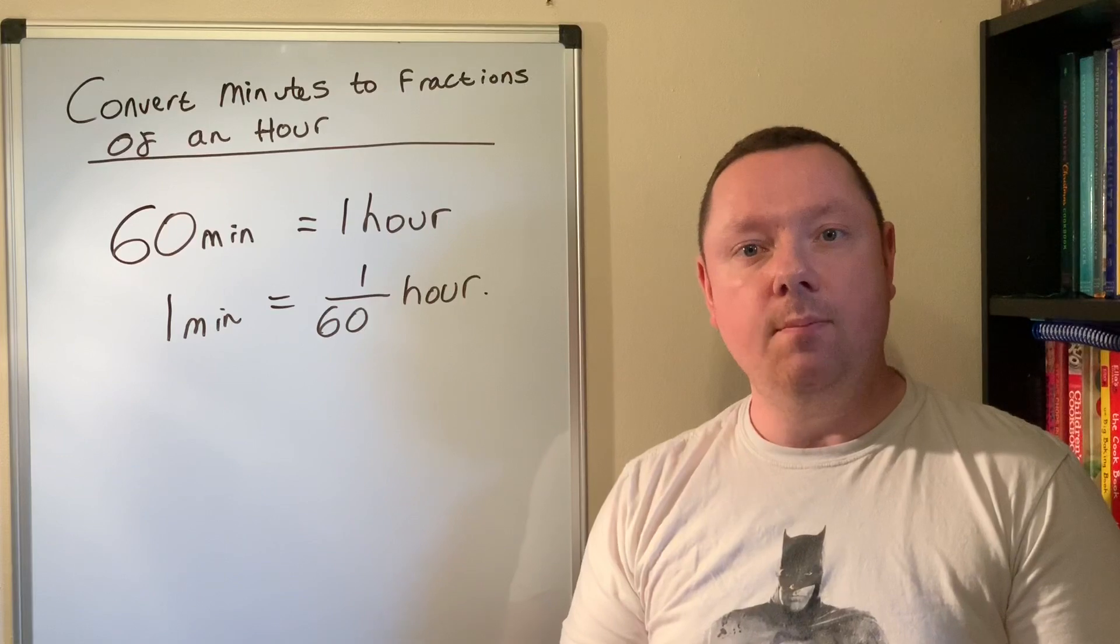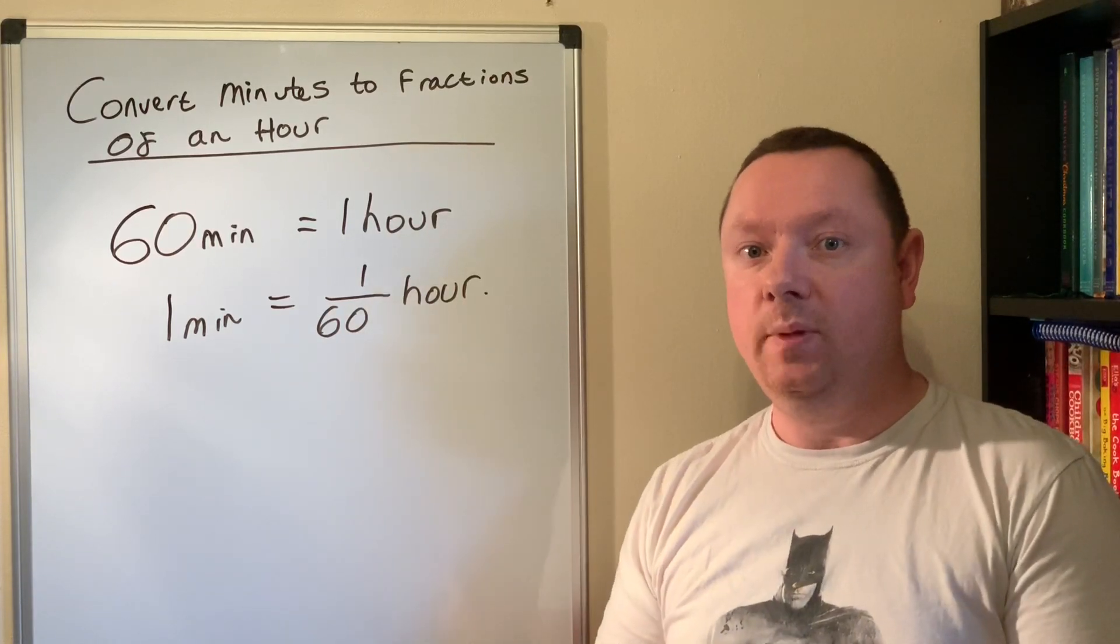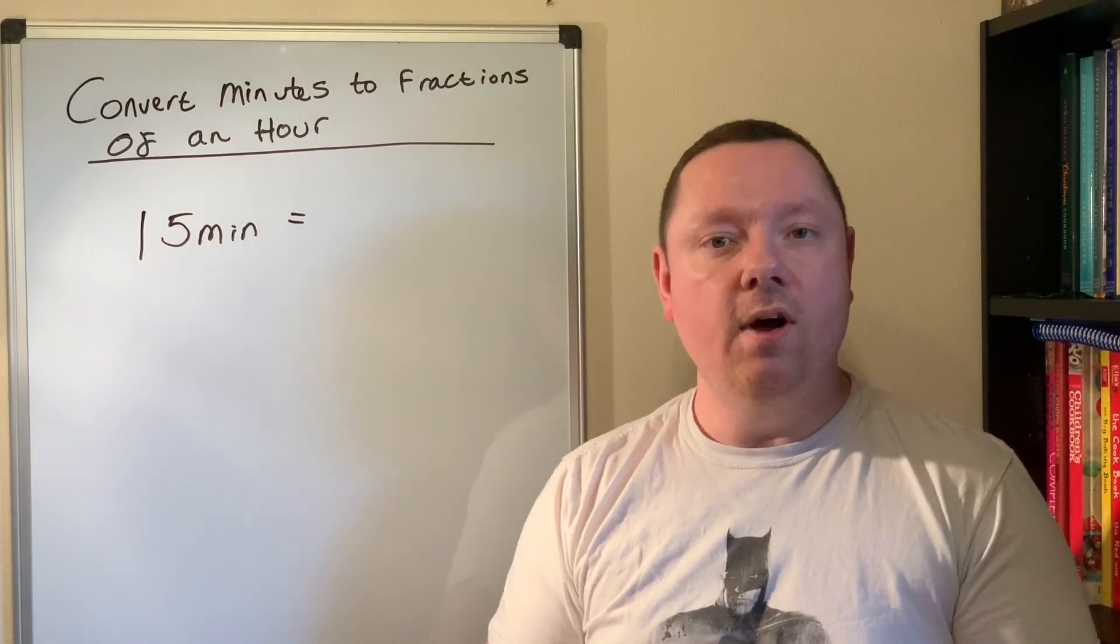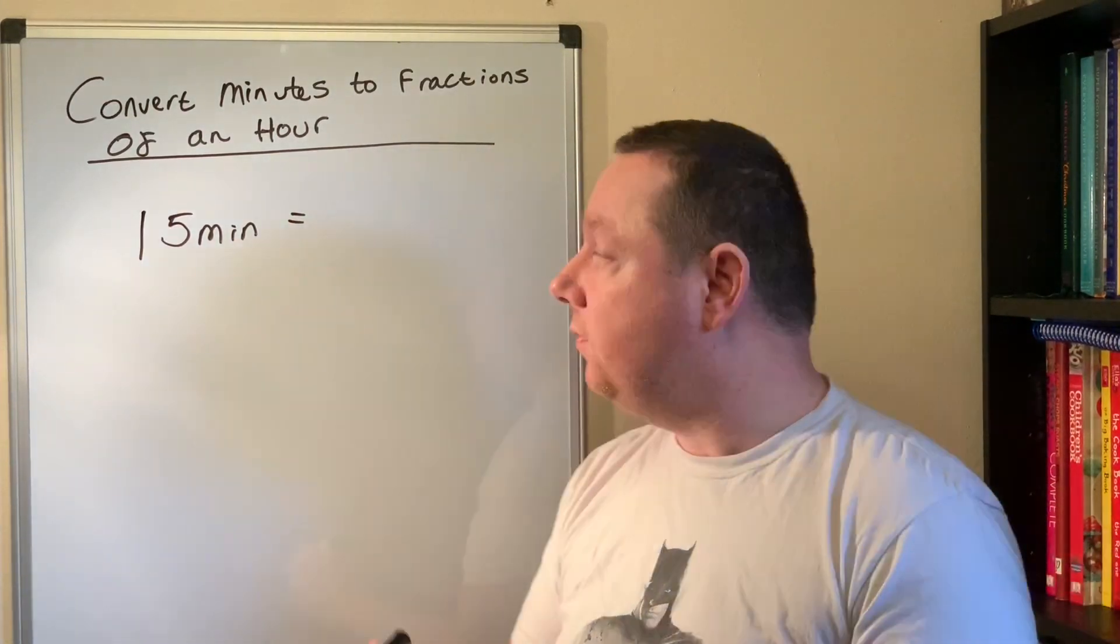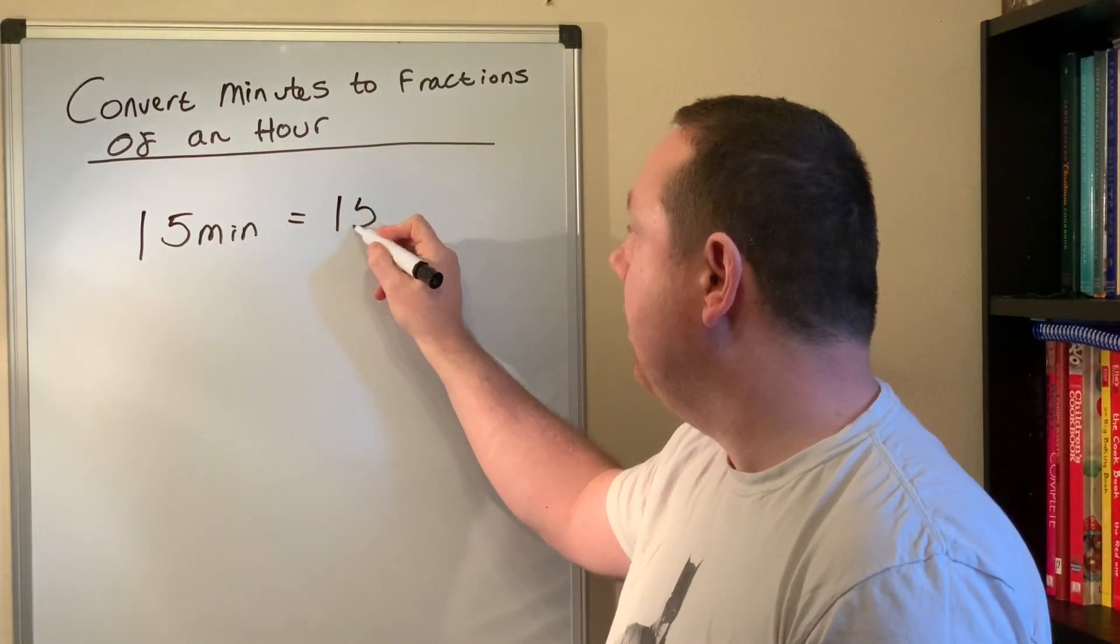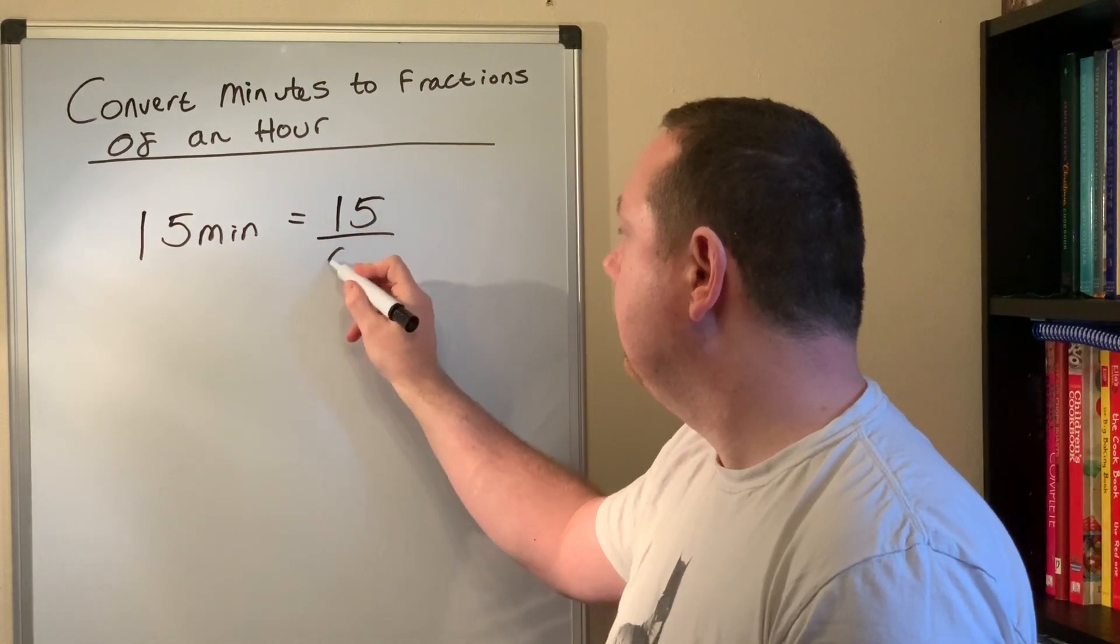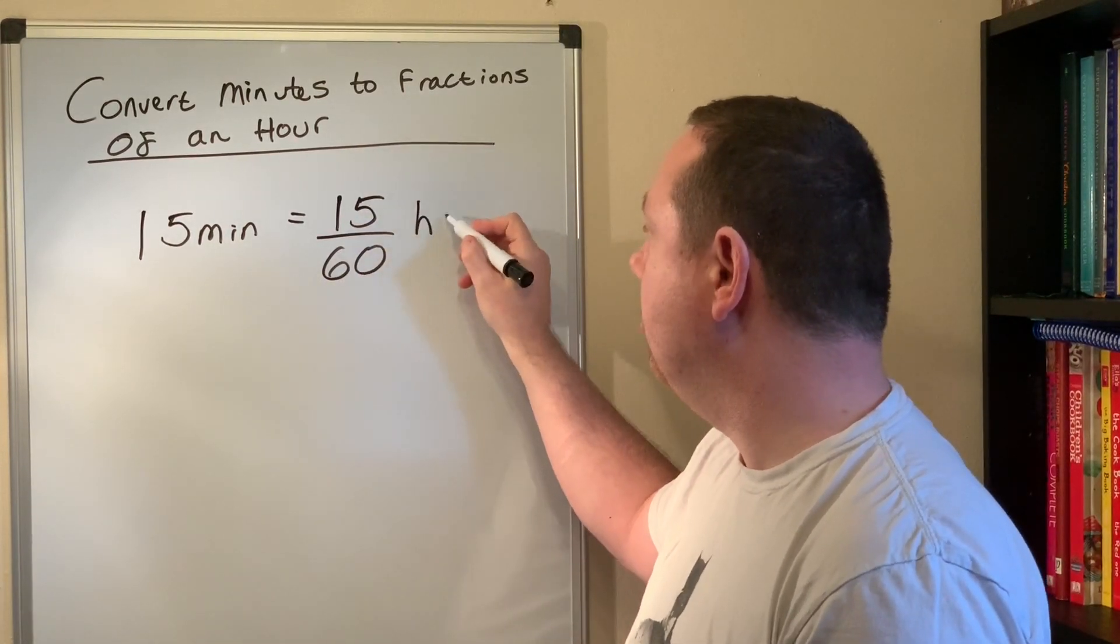Let's do a few simple examples just on that before we get into speed distance time problems. So if I had 15 minutes and I wanted to know what that was as a fraction of an hour, first thing I would always do is 15 out of 60. It's as simple as that, it's 15 out of 60 hours.